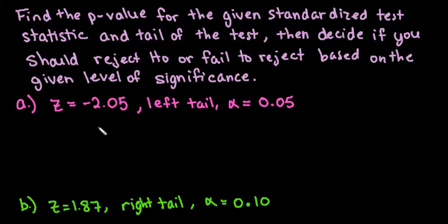The first one that we are given is that Z is negative 2.05. We have a left tail test and alpha is 0.05. So I always suggest drawing out a picture because most of the time when you're dealing with hypothesis tests, that's a requirement.